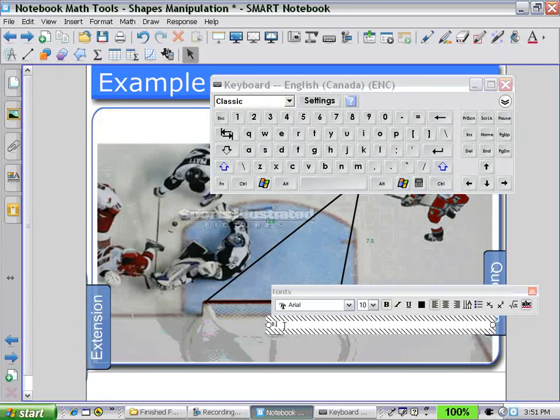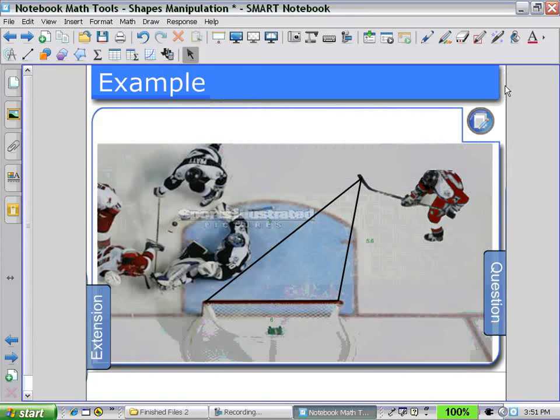And changing the dimensions to 6 feet. And as we click off, we have the other side lengths recalculate in relation to the 6 feet. Now the students can calculate, using the 3 side lengths, the angle required to get the puck into the net.